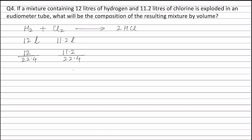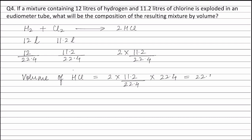1 mole of chlorine reacts with 1 mole of hydrogen to form 2 moles of HCl. Therefore, 11.2 divided by 22.4 moles of chlorine will react with 11.2 divided by 22.4 moles of hydrogen to form 2 × (11.2 / 22.4) moles of HCl. We can find out the volume of HCl: volume of HCl is equal to 2 × (11.2 / 22.4) multiplied by molar volume 22.4 liters, which equals 22.4 liters. Therefore, volume of HCl formed is 22.4 liters.